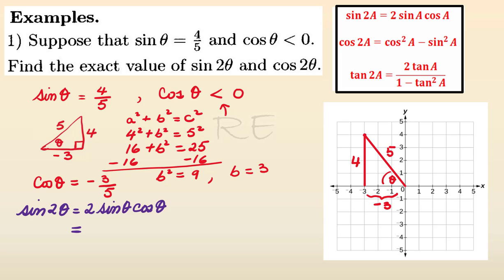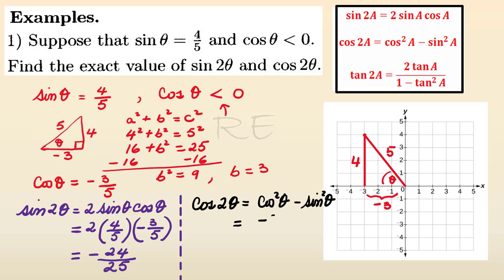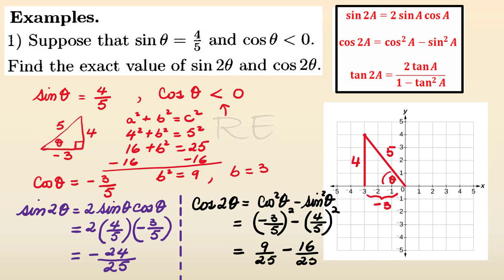Sine 2θ is equal to 2 sine θ cosine θ. Since sine θ is four-fifths and cosine θ is negative three-fifths, sine 2θ equals 2 times four-fifths times negative three-fifths, which is negative 24 over 25. Cosine 2θ equals cosine squared θ minus sine squared θ, so it is negative three-fifths squared minus four-fifths squared, which is 9/25 minus 16/25, giving negative seven over 25.